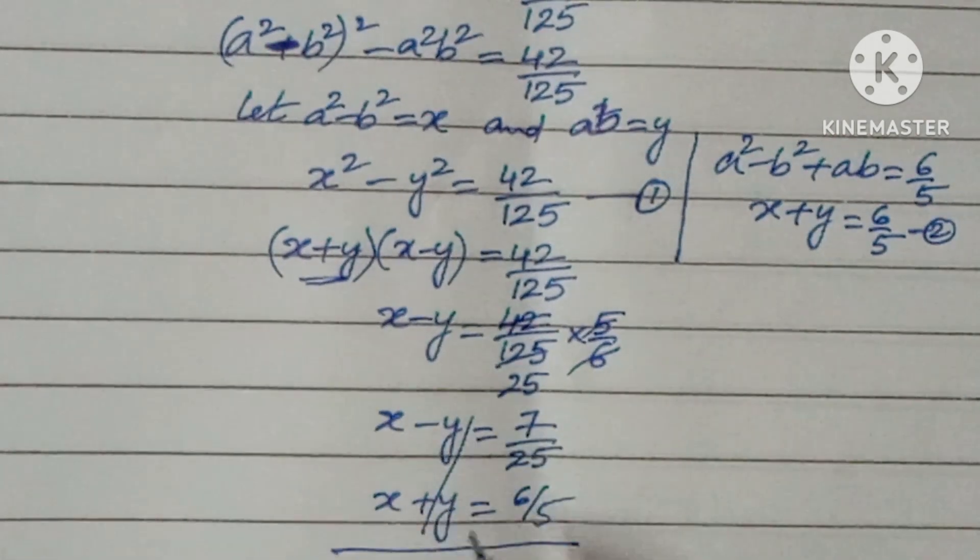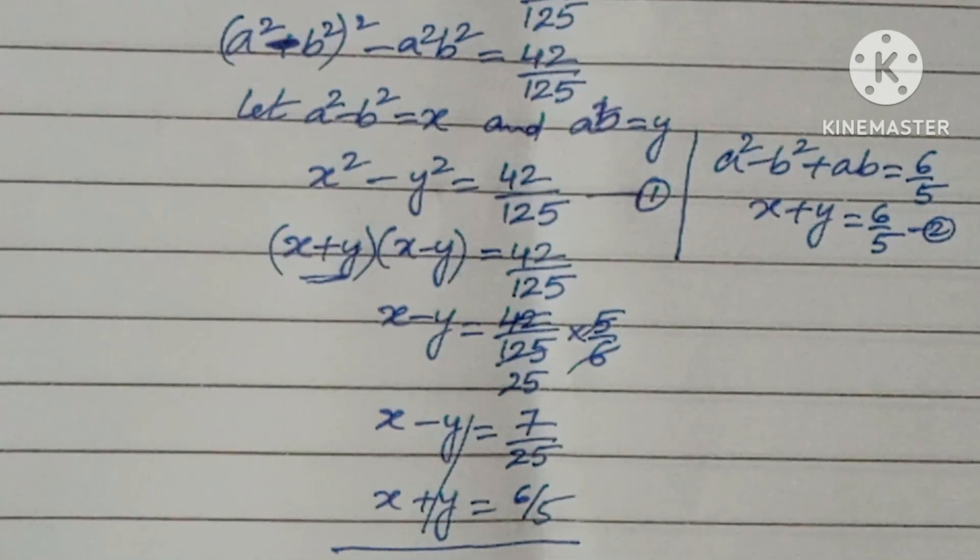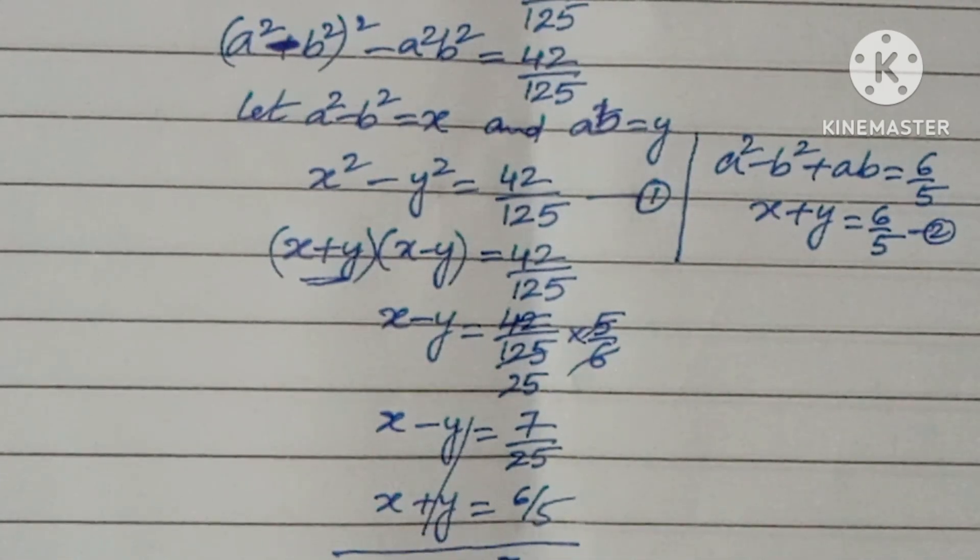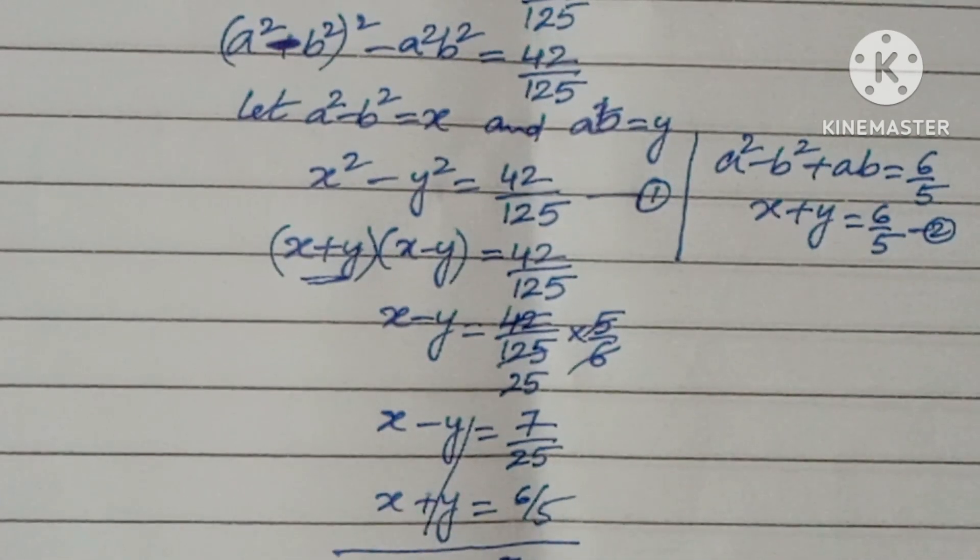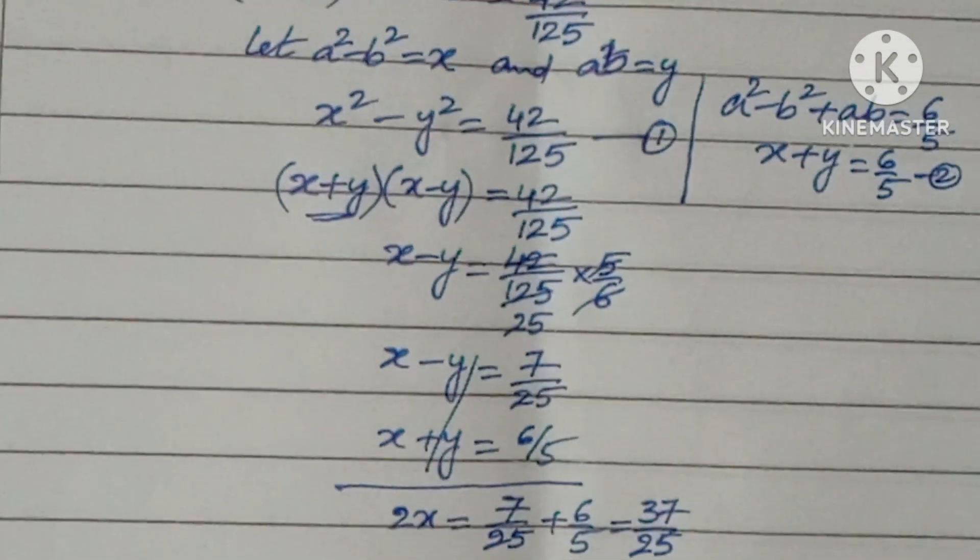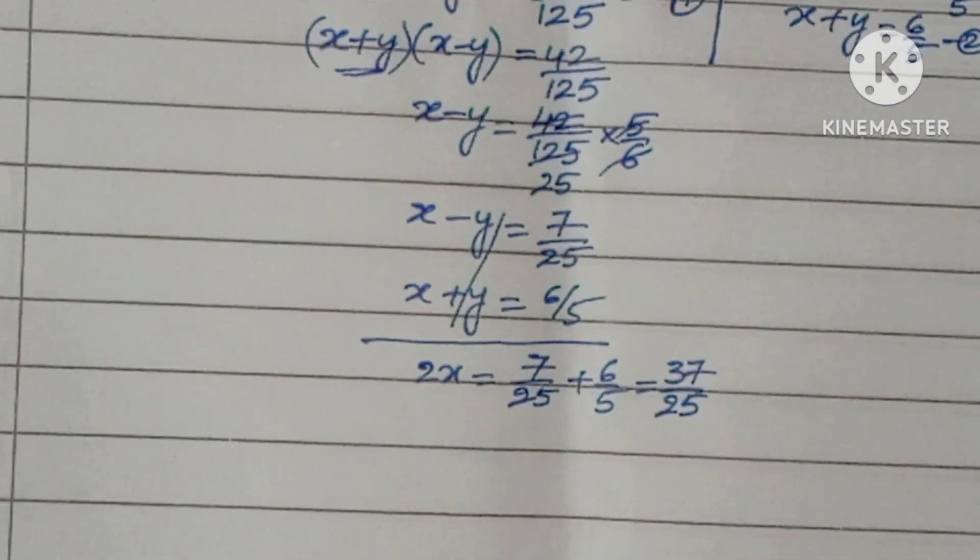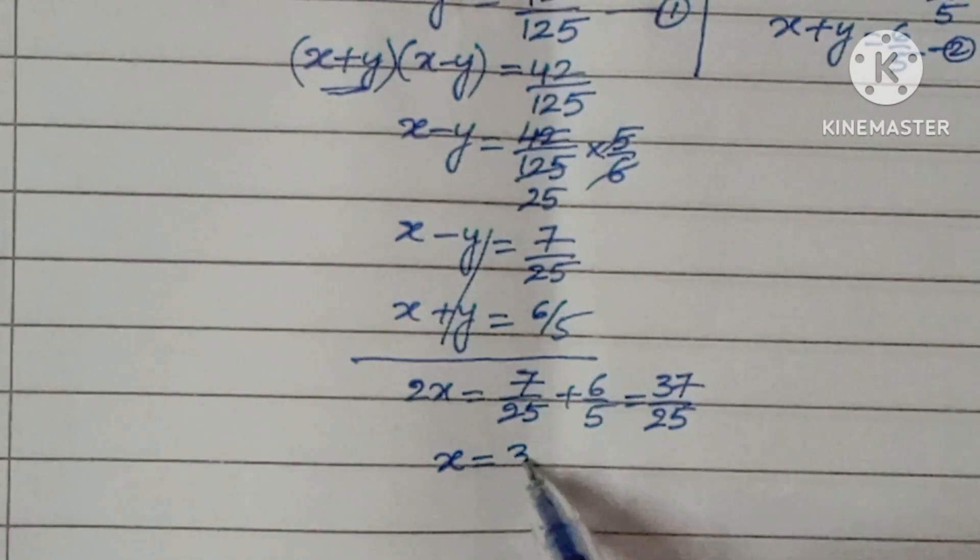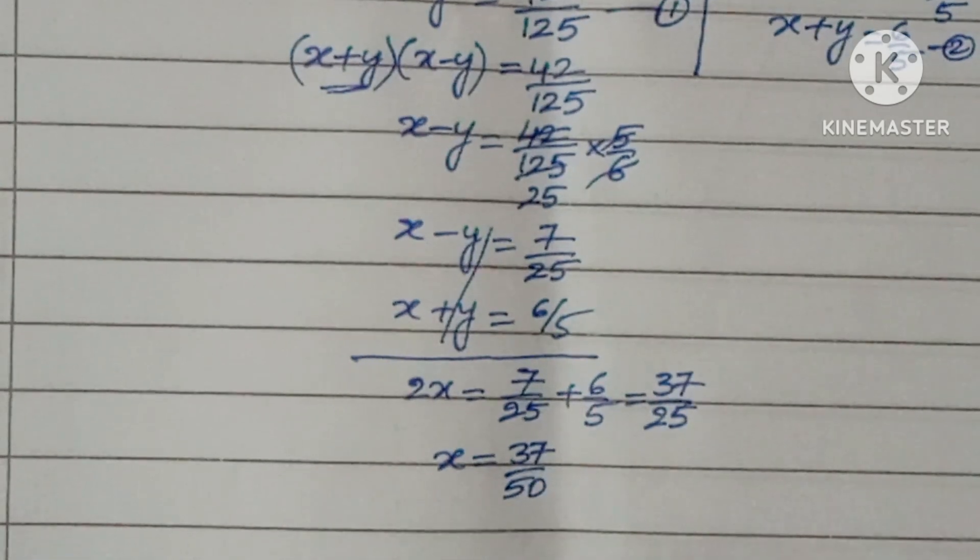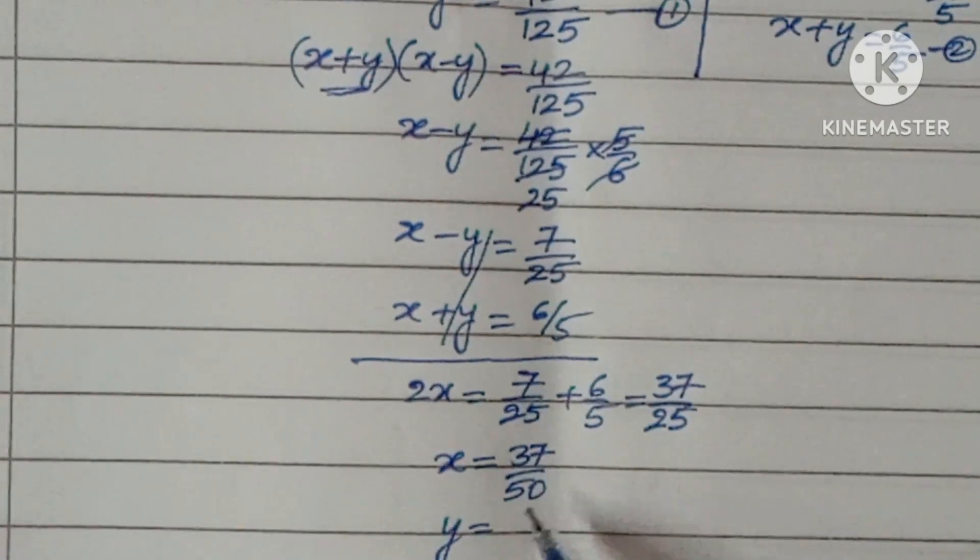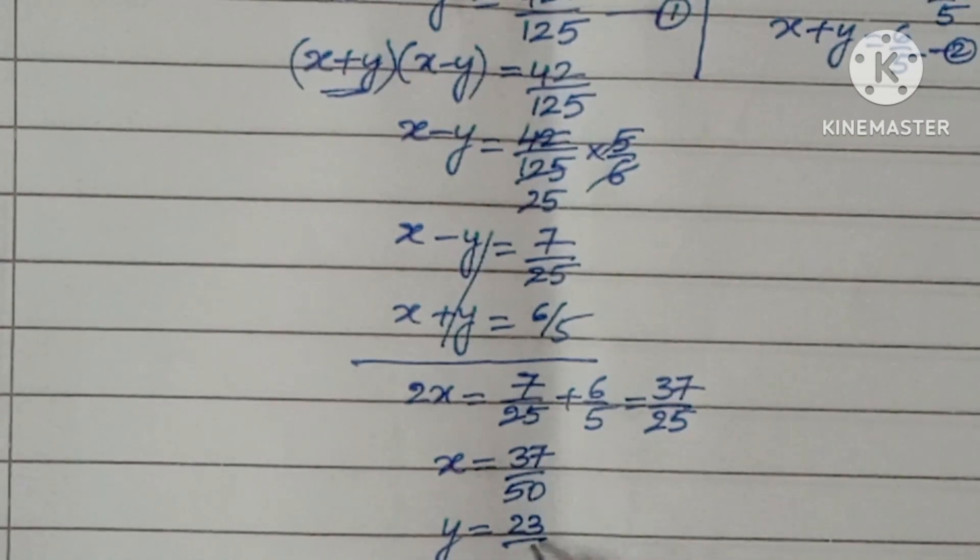Now, if you solve this, 2x = 7/25 + 6/5. So x = 37/50. Now, if you replace x value in any one of these, you will get y value 23/50.